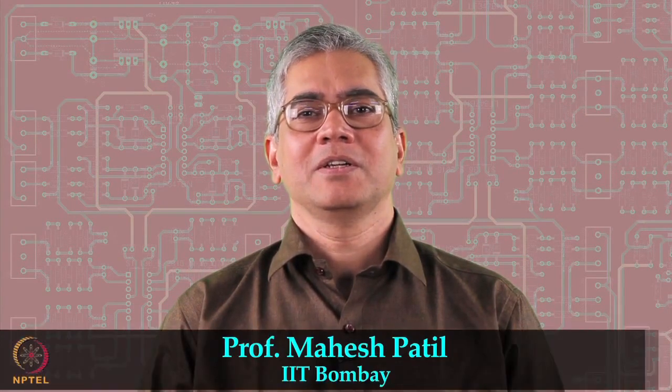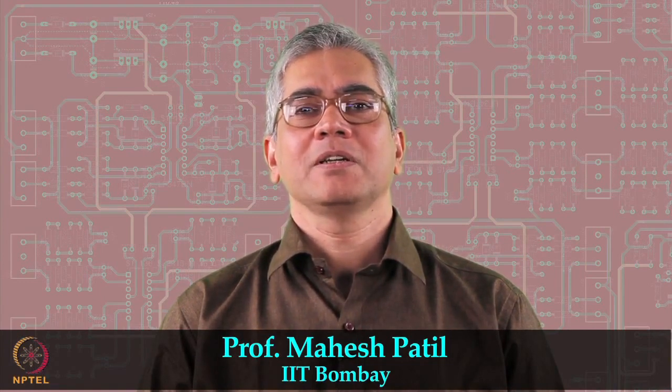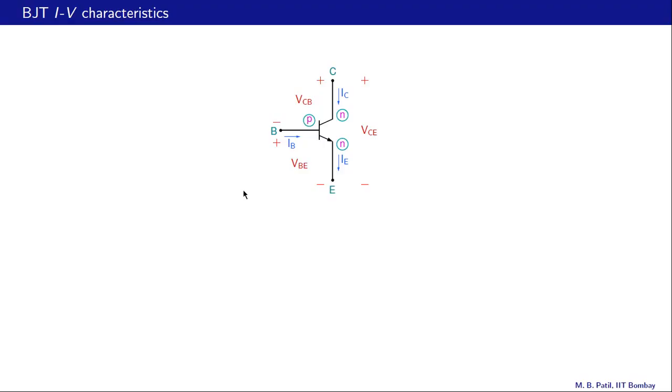Welcome back to basic electronics. In the last lecture we looked at the Ebers-Moll model, which describes the BJT in all modes of operation. We will now use the Ebers-Moll model to plot the collector current IC of a BJT as a function of the collector-to-emitter voltage VCE. With the help of the IV characteristics we will take another look at an earlier BJT circuit, find the correct solution, and finally look at a circuit with a PNP transistor.